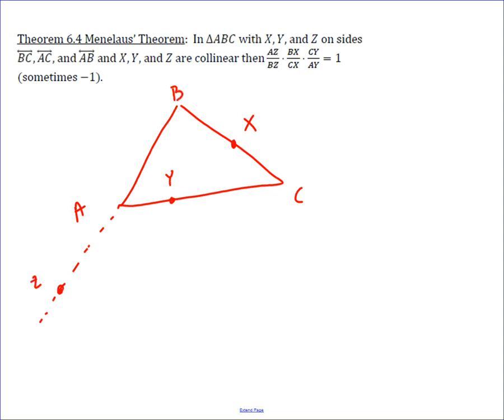And what it says is when you draw in these segments, AZ over BZ, and then BX over CX, and CY over AY. And you can kind of see the relationship here: A over B, B over C, C over A, and then to these three points that are on there.